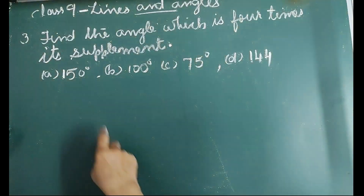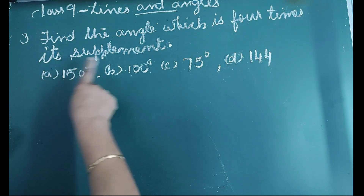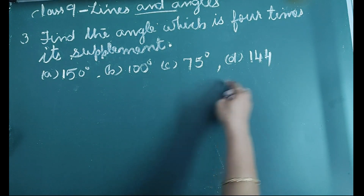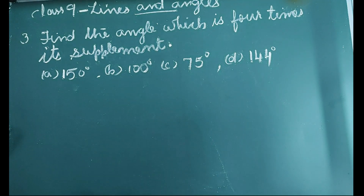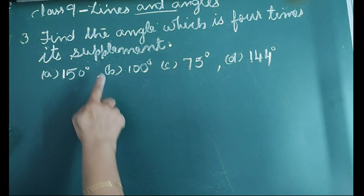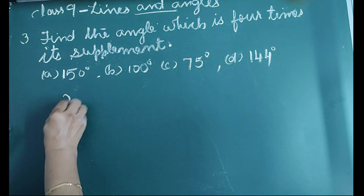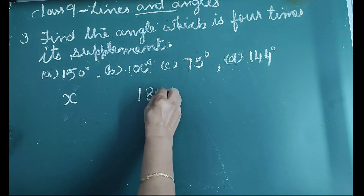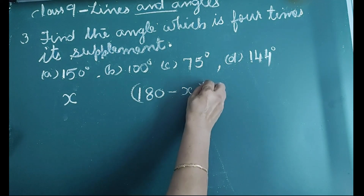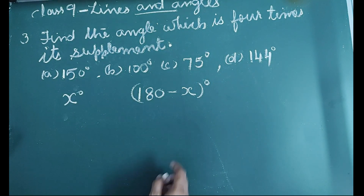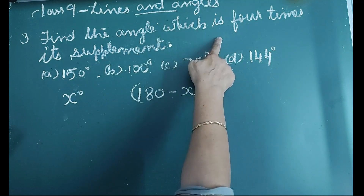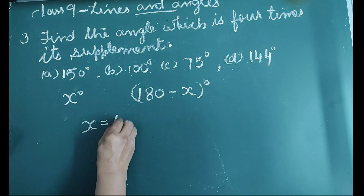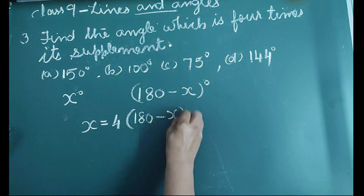Question 3: Find the angle which is 4 times its supplement. Options given: 150°, 100°, 75°, and 144°. Let us consider the angle as x. We know the supplement of this angle is (180° − x). According to the question, the angle is 4 times its supplement, so x = 4 × (180° − x).